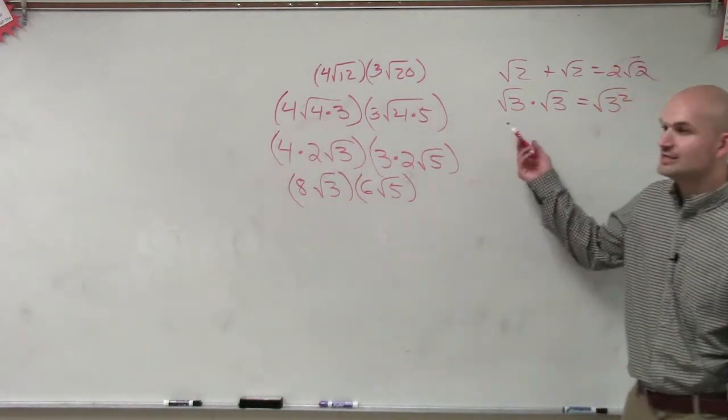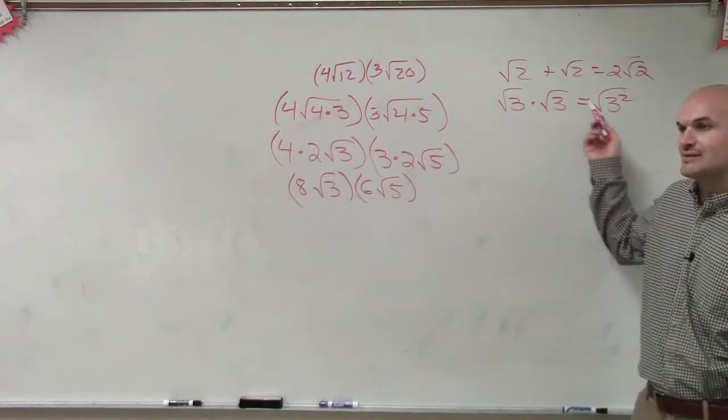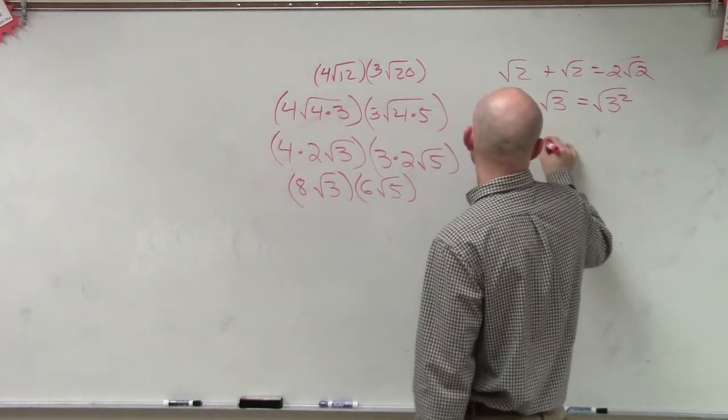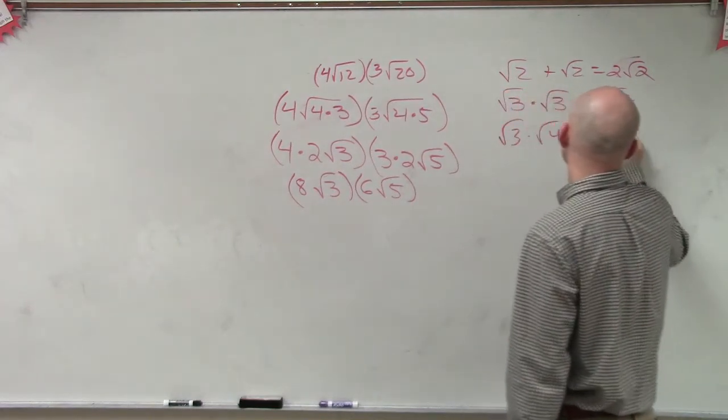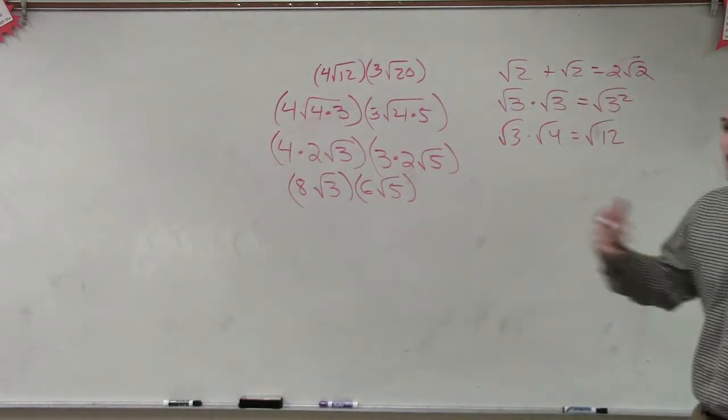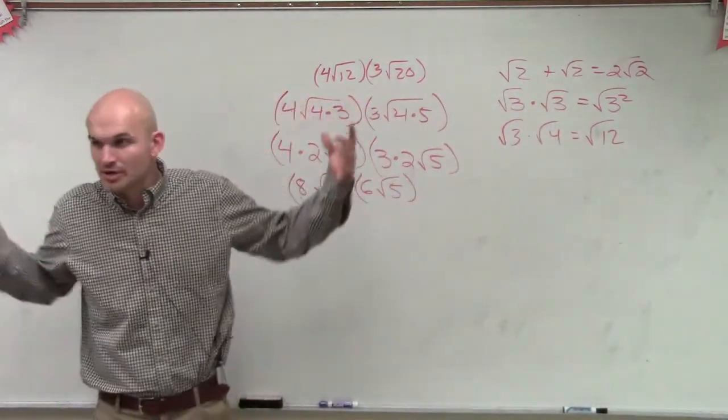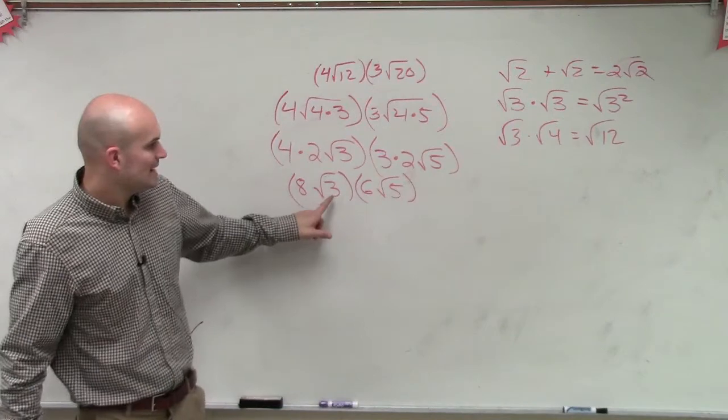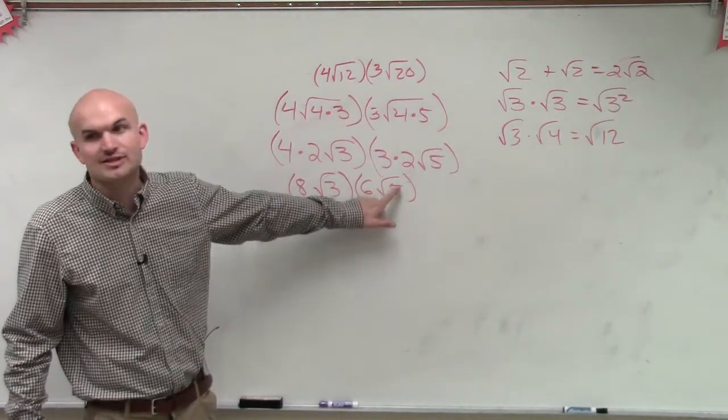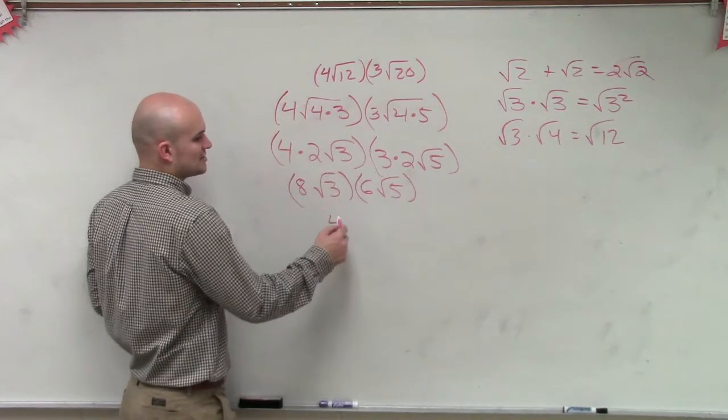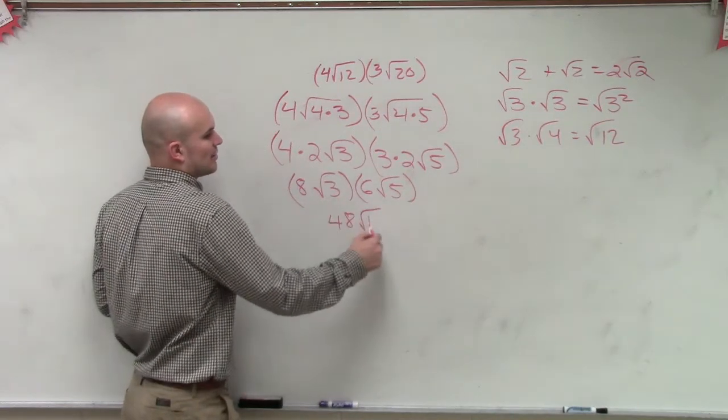So now, ladies and gentlemen, what you guys need to understand is square root of 3 times square root of 3 is square root of 3 squared. The square root of 3 times the square root of 4 equals the square root of 12. So when you're multiplying, you can have different radicands, but you just multiply them. So here, I'm going to have square root of 3 times 5, which is going to be the square root of 15. And then you do 8 times 6, which is 48 square root of 15.